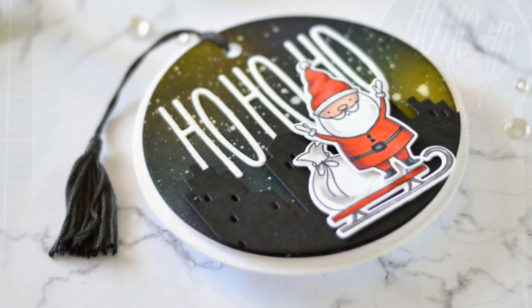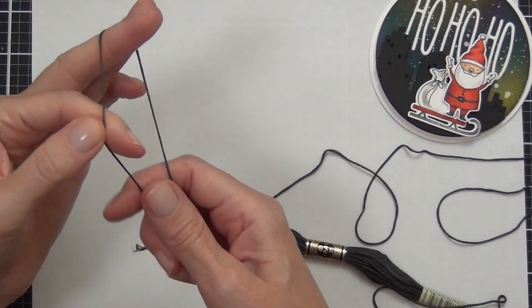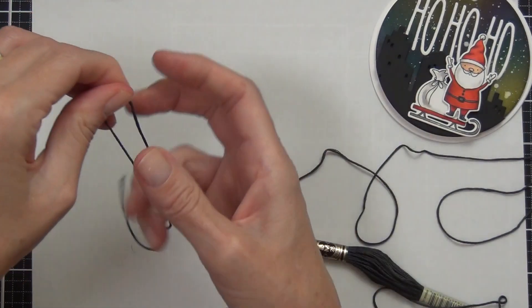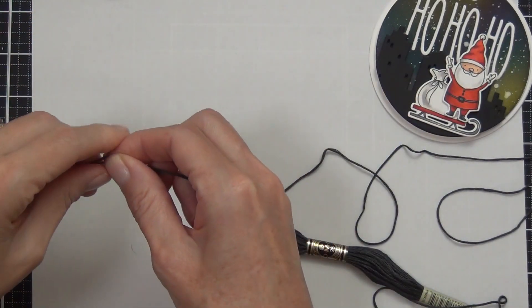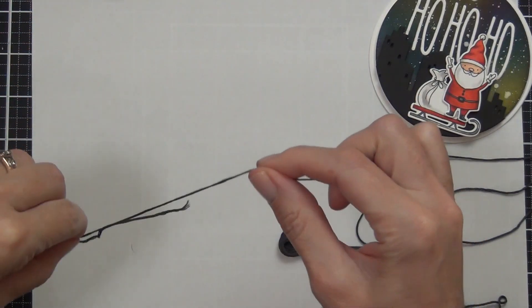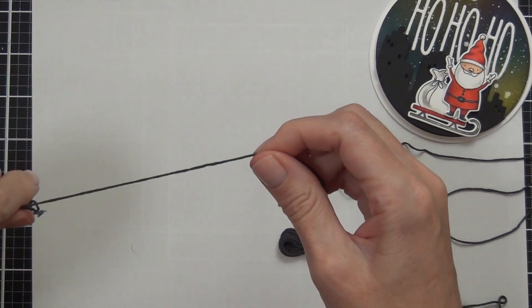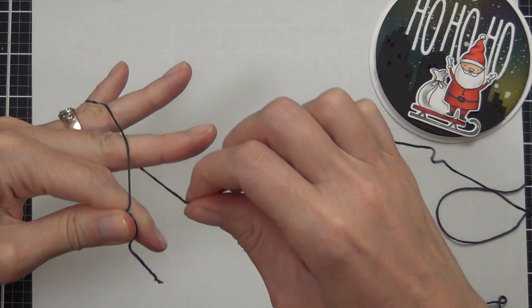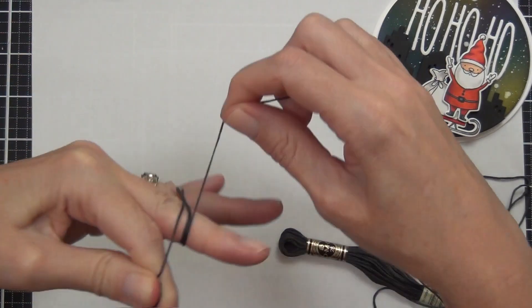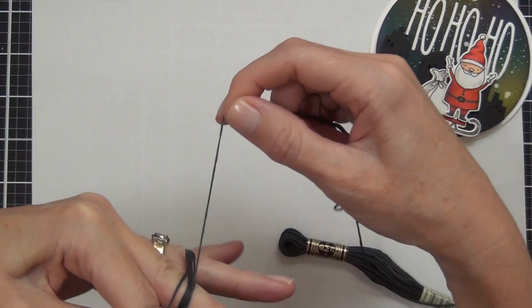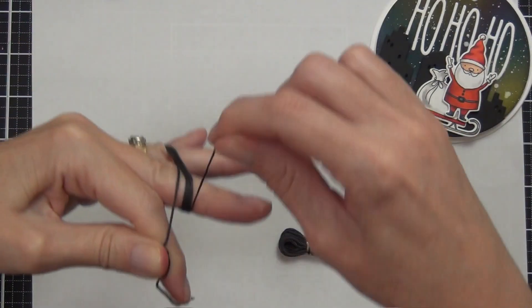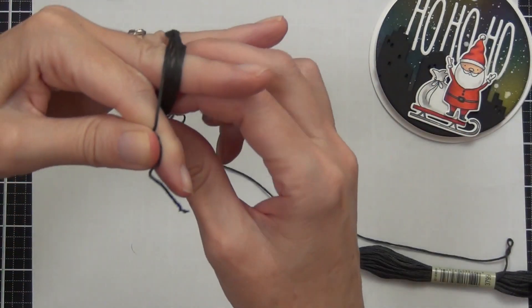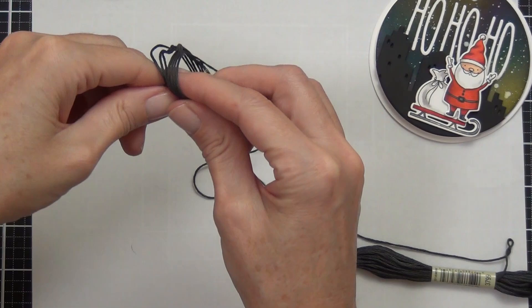A bonus tip today, I'm going to show you how I made this tassel and it's really easy to do. Now this loop that I'm creating here is the portion that's going to be threaded through my tag, so this is where it's going to be the tassel in. So I'm wrapping it around my fingers seven times to create a circle of thread.